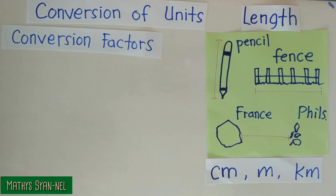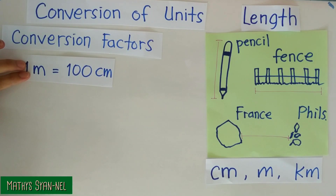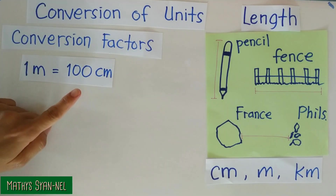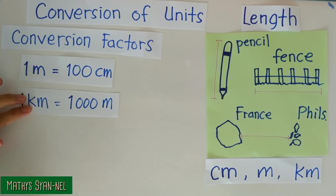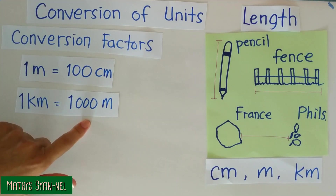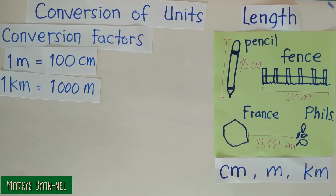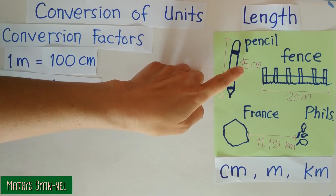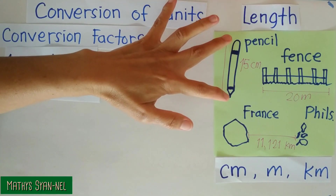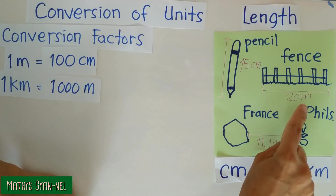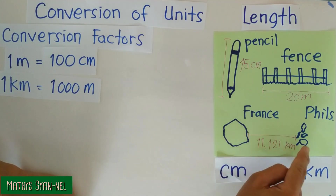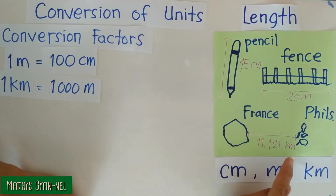Now, let's do the conversion of units for length. Before we can do it, we need to know the conversion factors. One meter equals 100 centimeters. One kilometer equals 1,000 meters. It's important that you know this so that you can convert one unit to another. In the illustration, the pencil measures 15 centimeters in length, the fence is 20 meters, and the distance from France to Philippines is 11,121 kilometers.